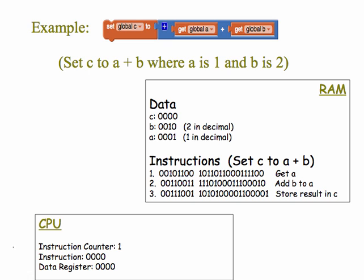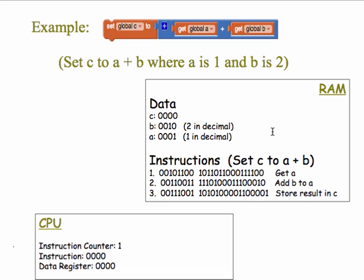So let's take a simple example here. Suppose we have this high-level app inventor block that sets the global variable C to the sum of global variable A and global variable B, where A is 1 and B is 2. Once that code has been translated into machine language, it might look something like shown in this picture of RAM. So we have our three global variables C, B, and A. A is a 1, B is a 2, C is a 0 at the moment. And then we have the machine language instructions that high-level code has been translated into. It says, get an A, add B to A, and store the result in C. So the high-level app inventor abstractions have been translated into abstractions that the computer can understand.